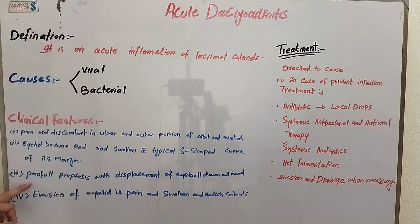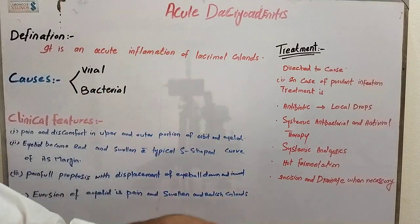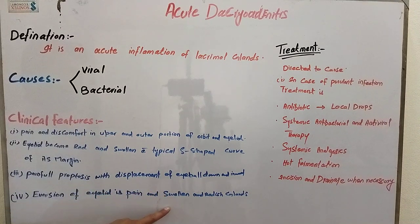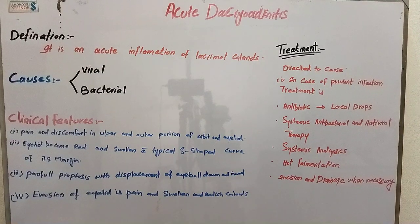Remember there will be painful proptosis, and the eyeball will be displaced downward and inward. Point number four, eversion of the eyelid is painful and shows swollen and reddish glands. So the four main points are: pain and discomfort in the orbit and eyelid, eyelid becomes red and swollen with S-shaped curve, painful proptosis, and eversion of the eyelid is painful.